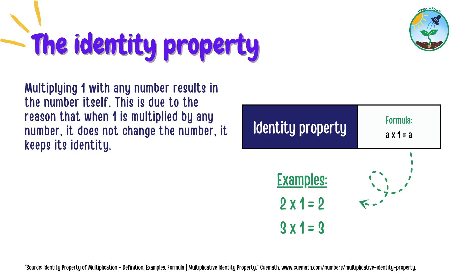The identity property tells us that multiplying one with any number results in the number itself. This is due to the reason that when one is multiplied by any number, it does not change the number — it keeps its identity.